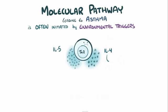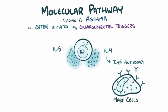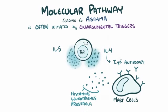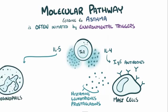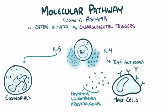For example, interleukin-4 leads to the production of IgE antibodies, which coat mast cells and stimulate them to release granules containing things like histamines, leukotrienes, and prostaglandins. Interleukin-5, on the other hand, activates eosinophils, which promote an immune response by releasing more cytokines and leukotrienes.